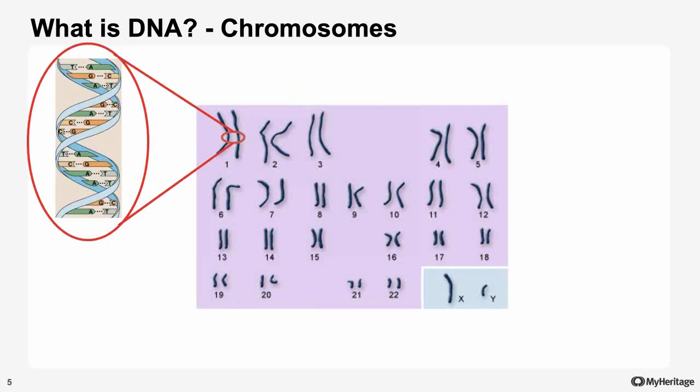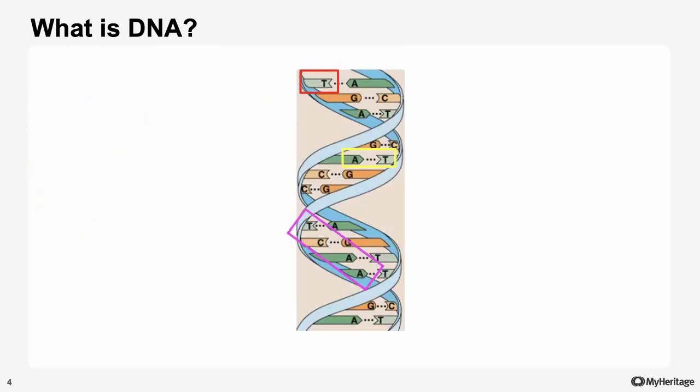If we zoom out a bit from individual SNPs, we'll see that together they form chromosomes. We have a total of 23 pairs of chromosomes: 22 are called autosomal and are present for both males and females, and one pair of sex chromosomes — XX for females and XY for males. The reason we have a pair of each chromosome is that we inherit one strand from each parent. Each base pair takes one base from the strand received from one parent and the other base from the other parent.